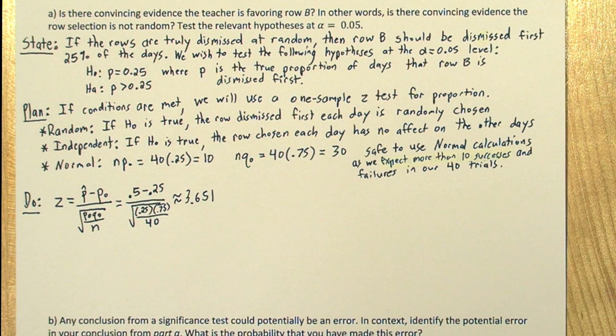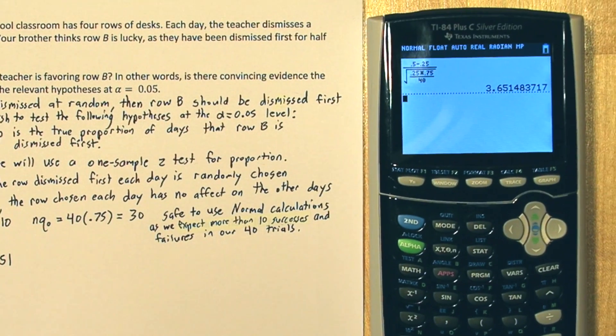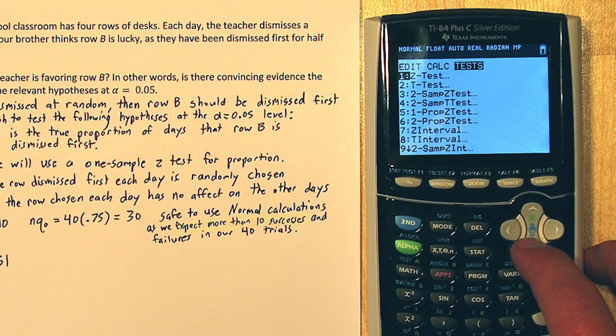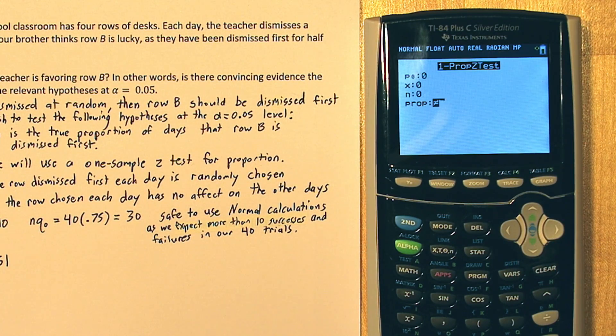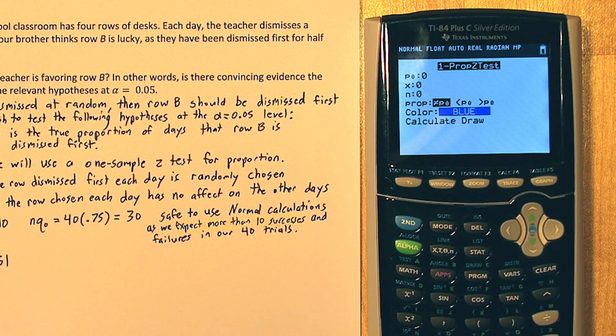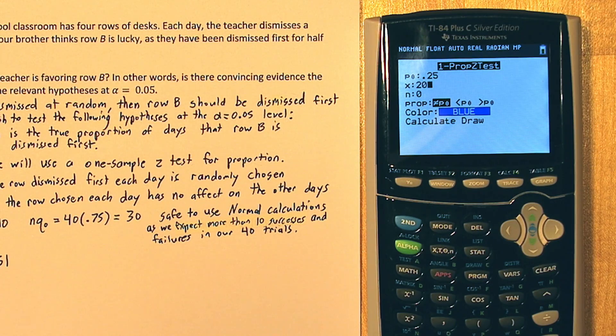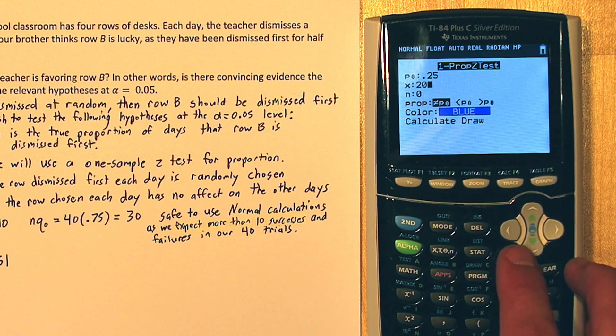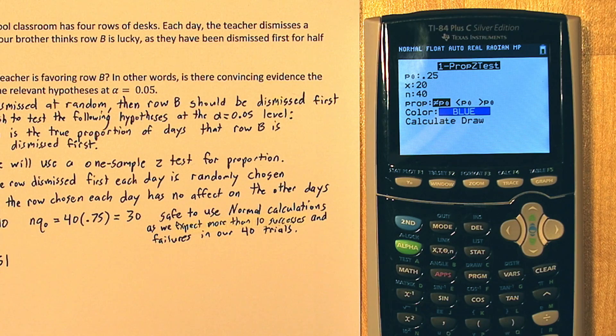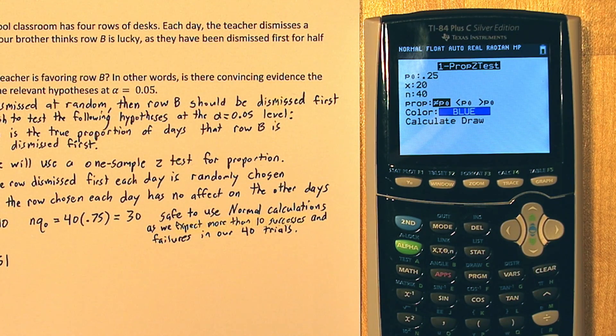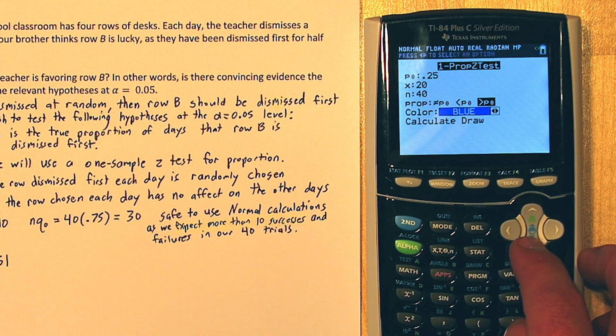Let's figure out what that means. On the calculator, if you press the stat button, and then go over to test, choose one prop z-test. Now on one prop z-test, we can say our claimed proportion was 0.25, our null proportion, and we had 20 times where row B was dismissed first out of a total of 40 trials. And our alternative hypothesis is we suspect that the true proportion is actually greater than 0.25. So we'll select that last option.